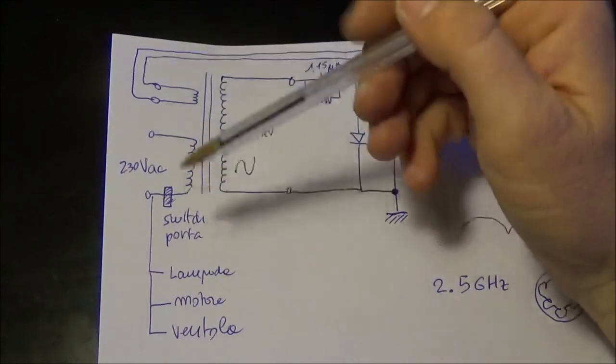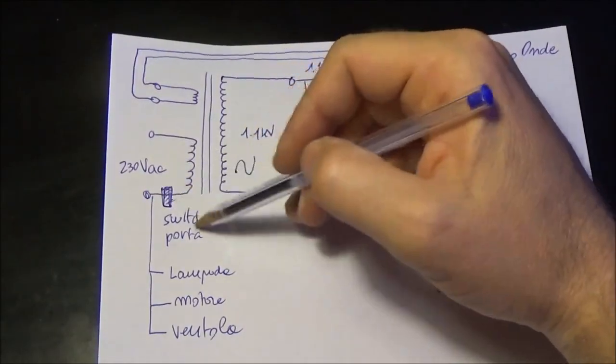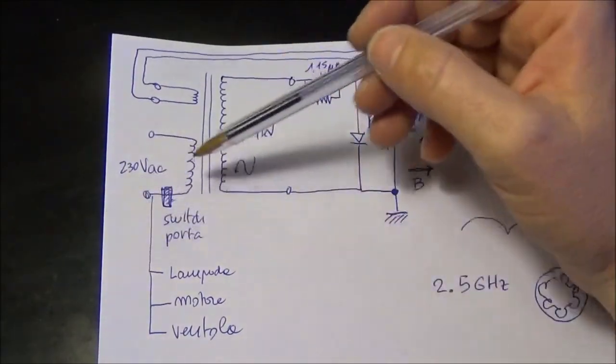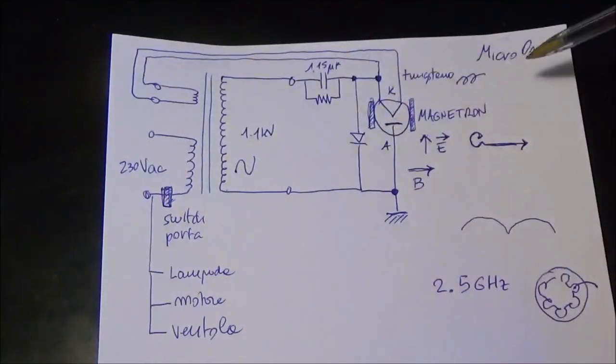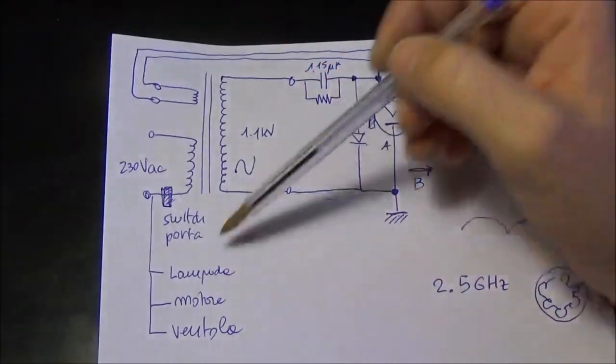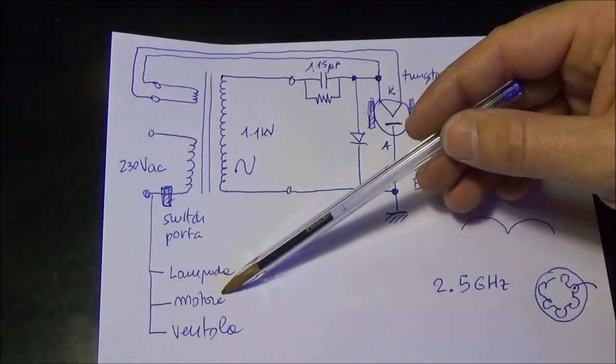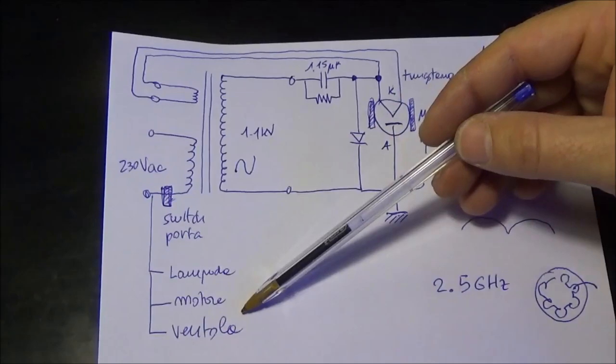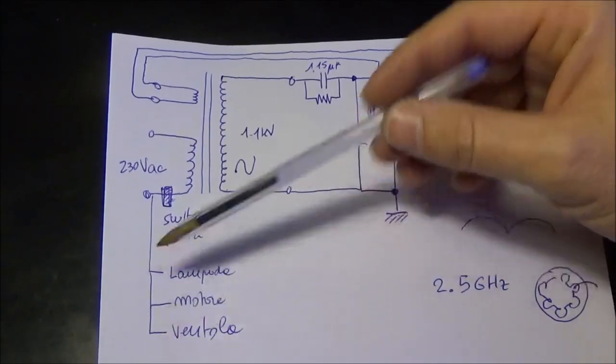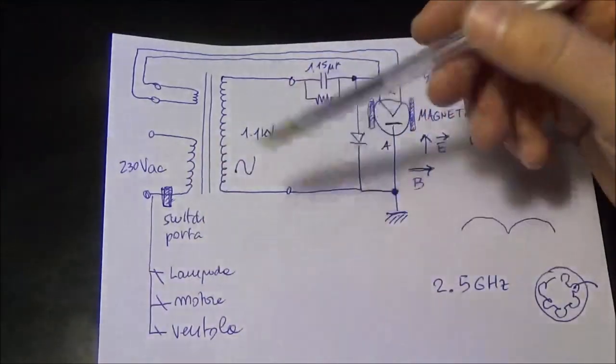I also put a switch on the mains primary in order to disconnect the current if the door of the oven will open. The typical loads are the lamps, the motor, and also the fan used by the microwave oven. This load can be cut by relays.